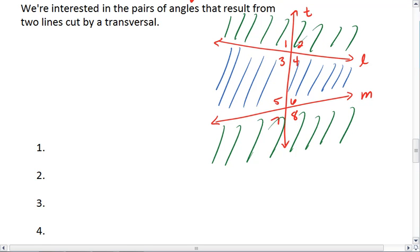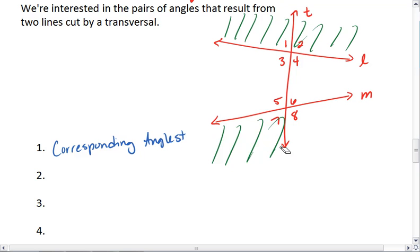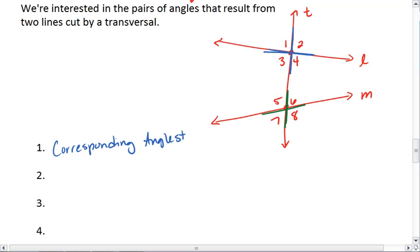The first pair that we're going to look at are called corresponding angles. Corresponding angles are when we focus on the two points of intersection. We should notice that the two lines split us into four angles. We use green down here. If the angles we're looking at are both, so let's say the upper right part of this cross, then they are called corresponding angles.